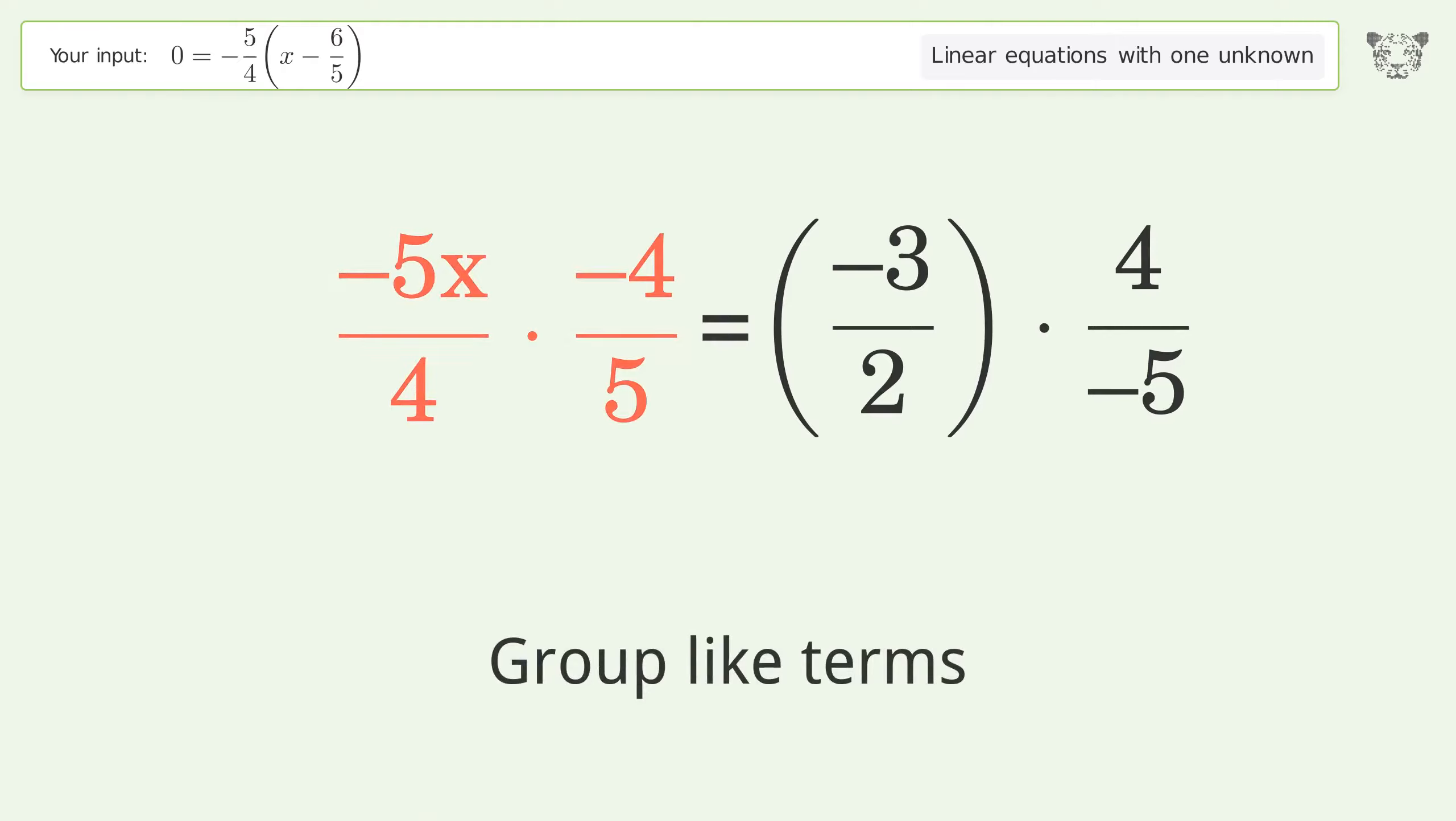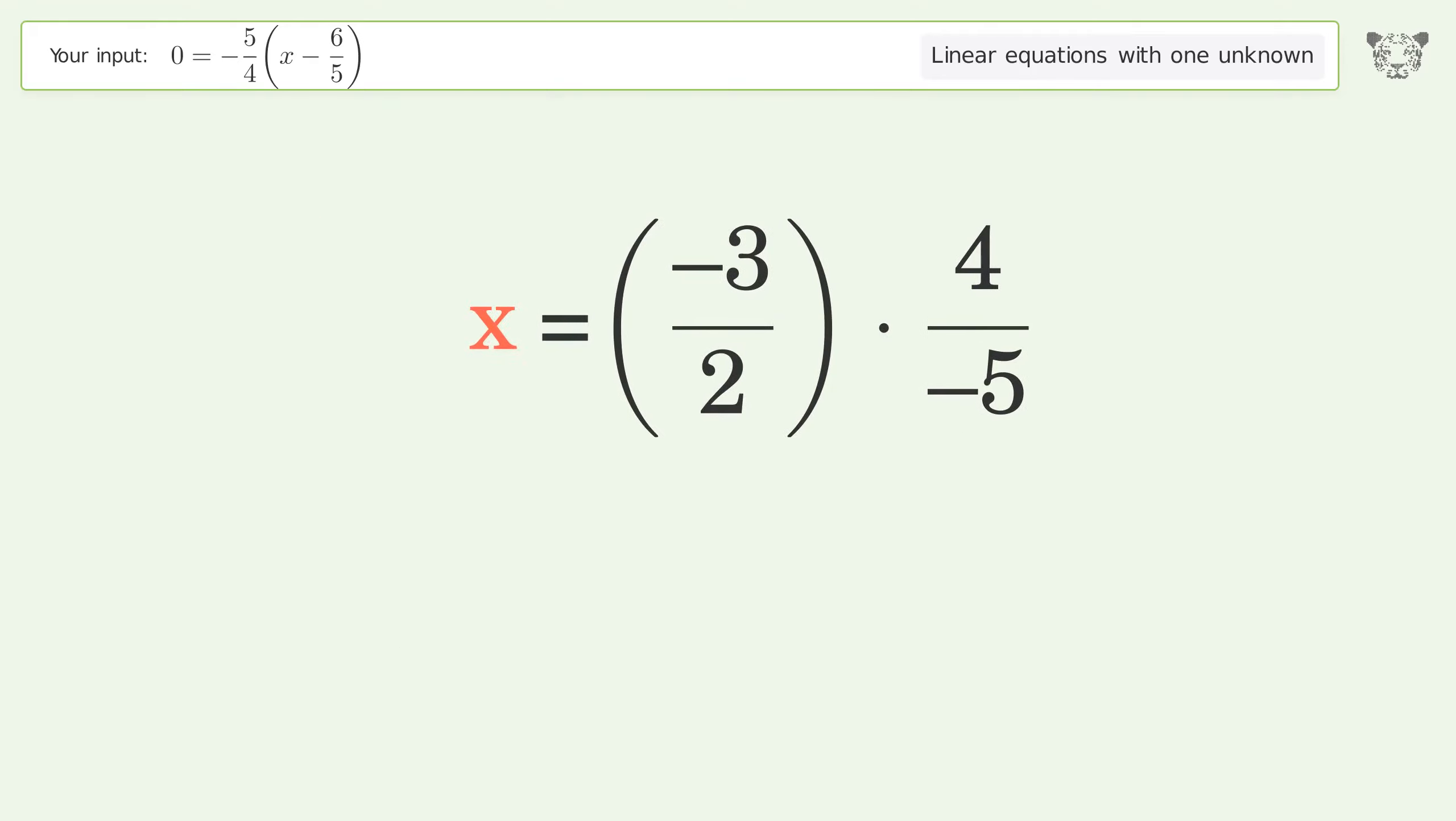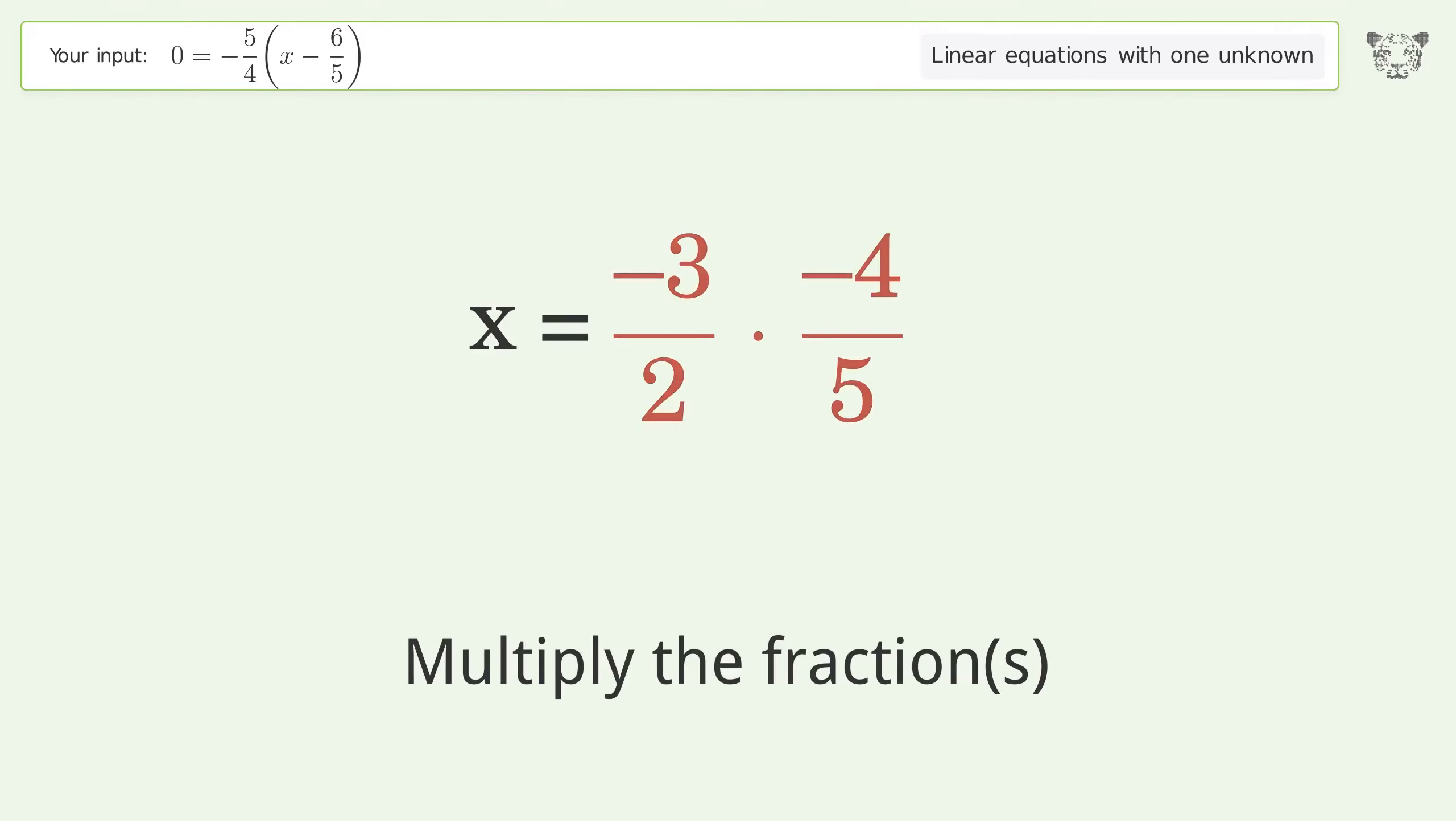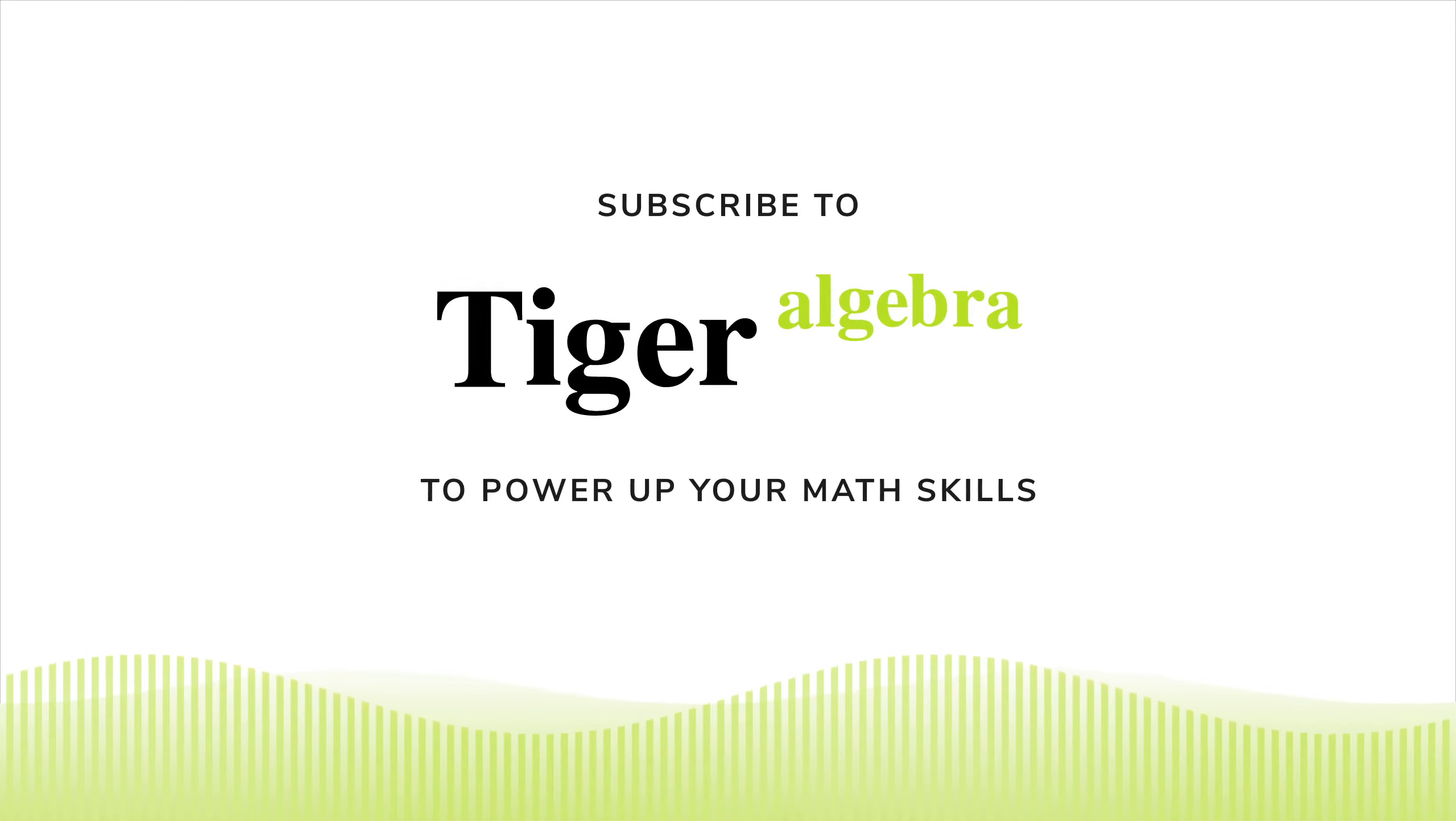Multiply the numerator, group like terms. Multiply the coefficients. Simplify the arithmetic. Move the negative sign from the denominator to the numerator. Multiply the fractions. Simplify the arithmetic.